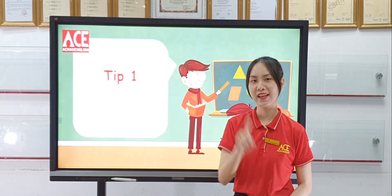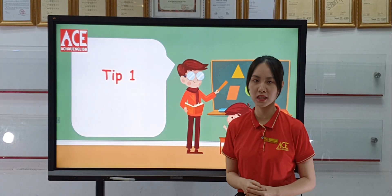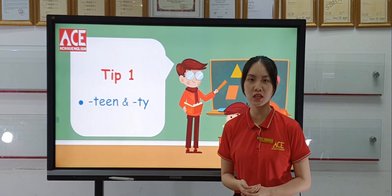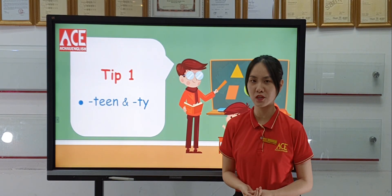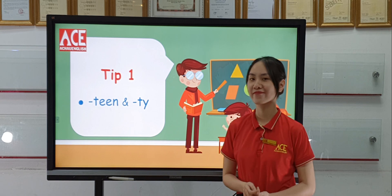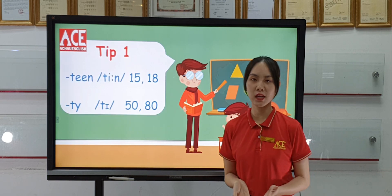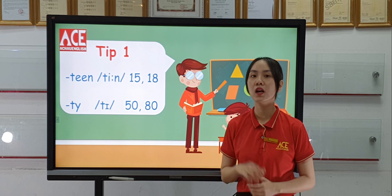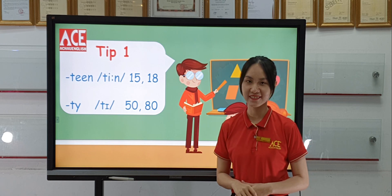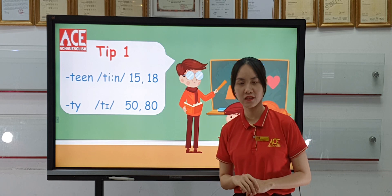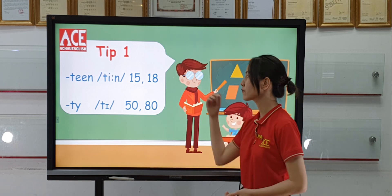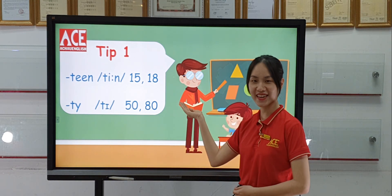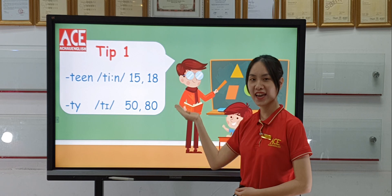Number 1: Identifying -teen and -ty in number pronunciation. What is the difference between them? Normally we pronounce -teen with a long vowel E. Let's practice: fifteen, fifteen, eighteen, eighteen.